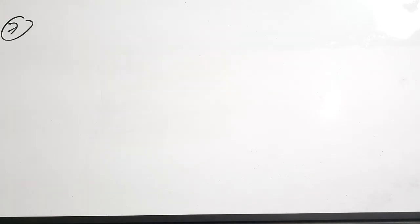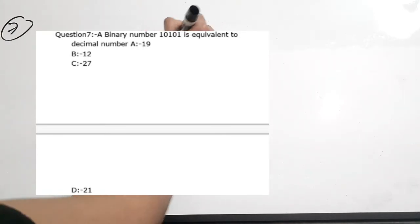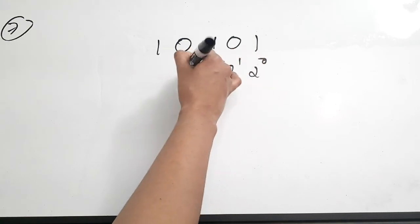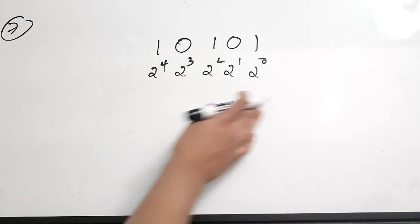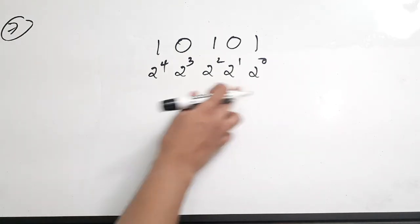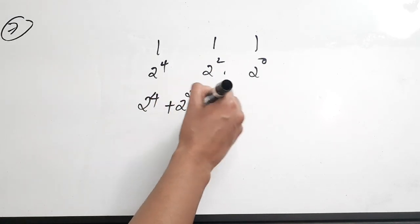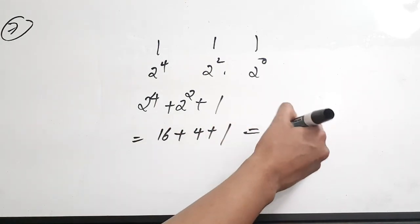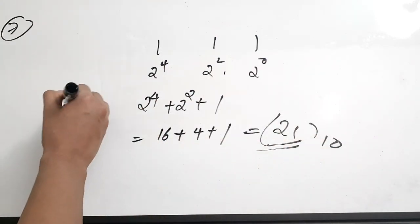Seventh question: binary number 10101 is equivalent to which decimal number? The binary number 10101 has bit positions with weights 2⁰, 2¹, 2², 2³, 2⁴. So we calculate: 2⁴ + 2² + 2⁰ = 16 + 4 + 1 = 21. The correct answer is 21 in base 10, which is option D.